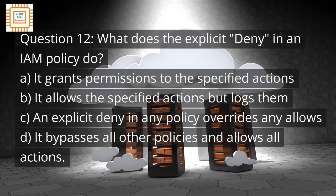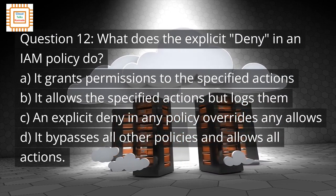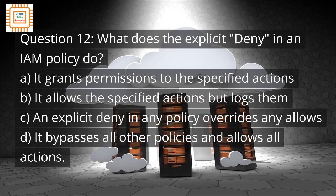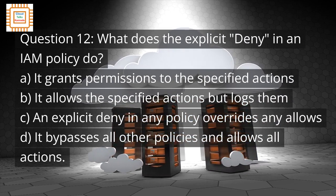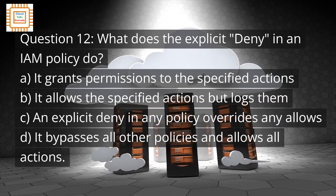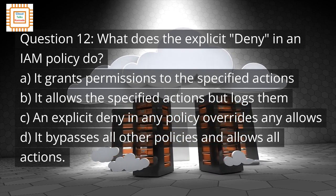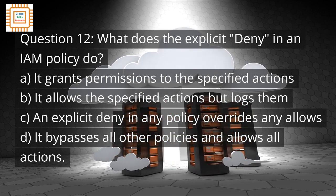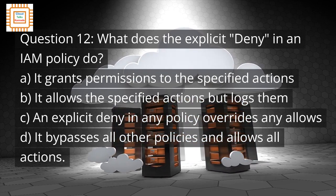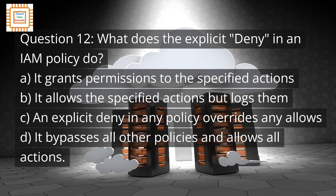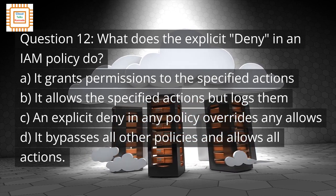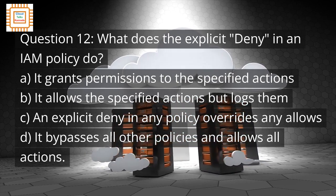Question 12: What does the explicit deny in an IAM policy do? A. It grants permissions to the specified actions. B. It allows the specified actions but logs them. C. An explicit deny in any policy overrides any allows. D. It bypasses all other policies and allows all actions.